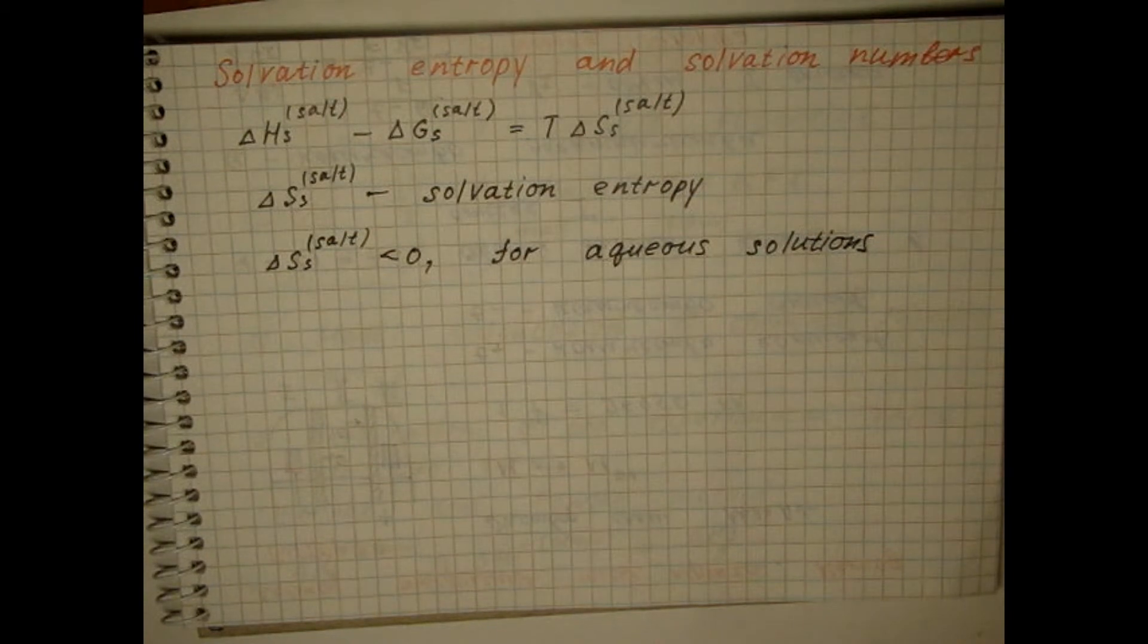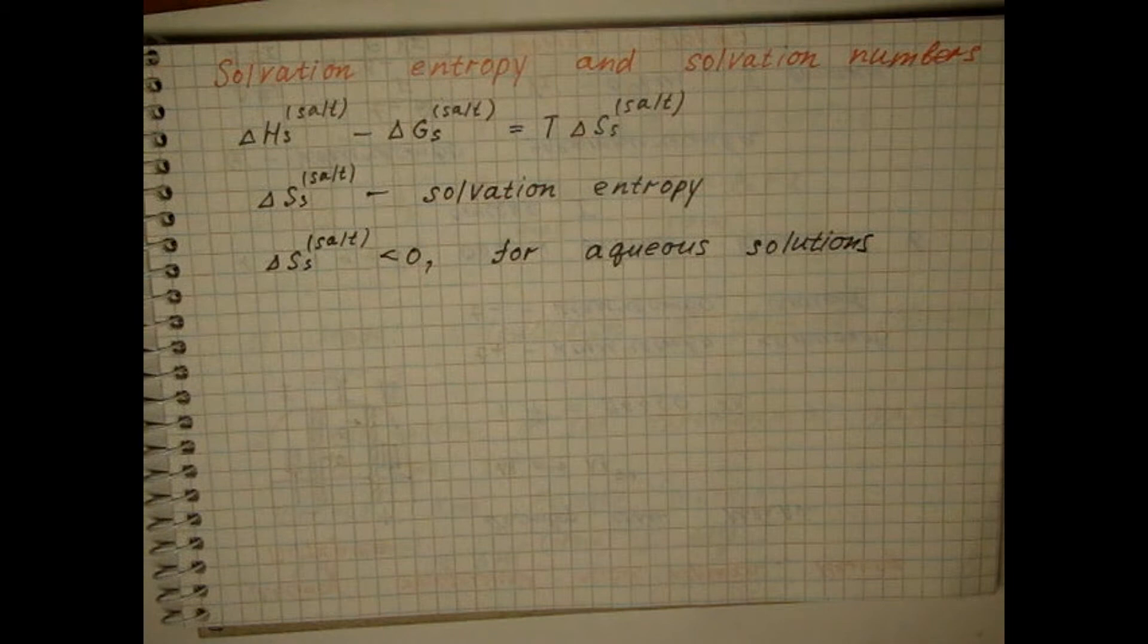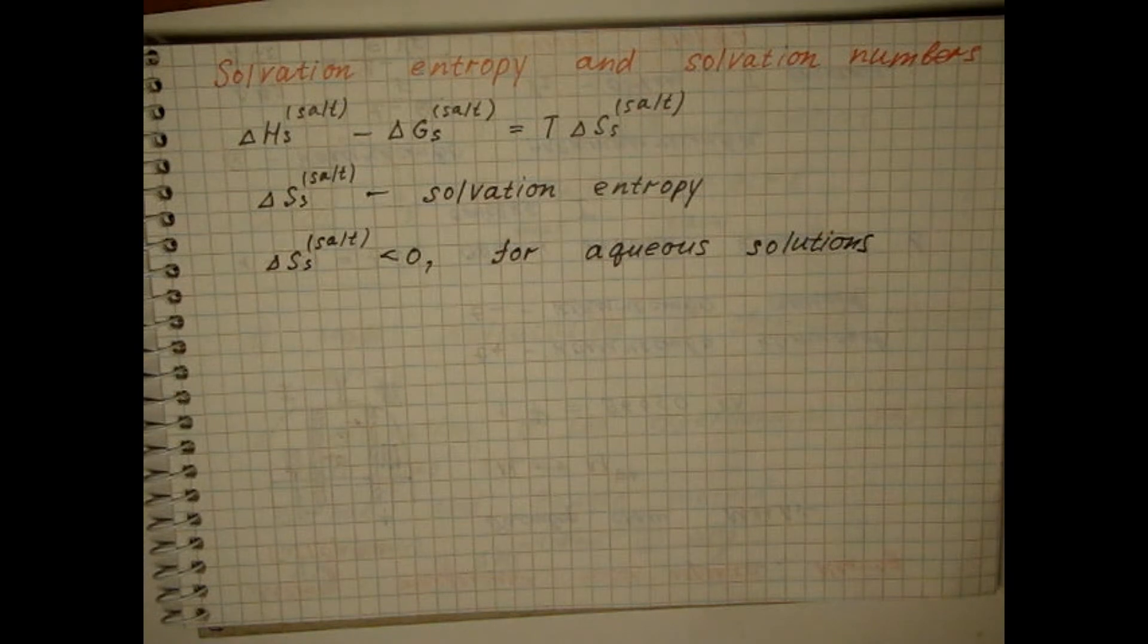It is impossible to separate the entropies of solvation of individual ions by experiment, and model assumptions are used to do this. In the framework of the Bohr model, the solvation entropy of an individual ion will be equal to...